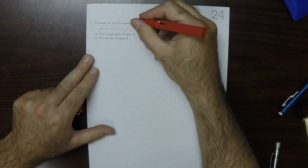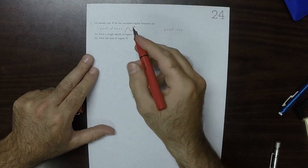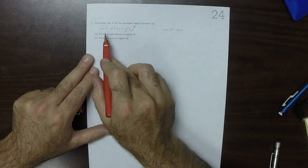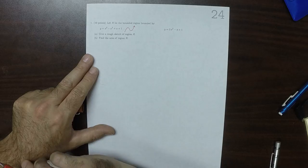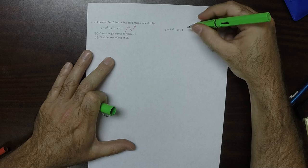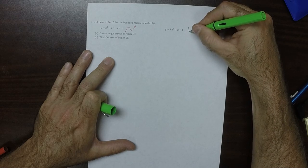I know it's going up to the right because its leading coefficient is positive. And this quadratic is a parabola that opens up.